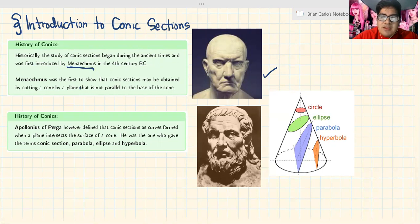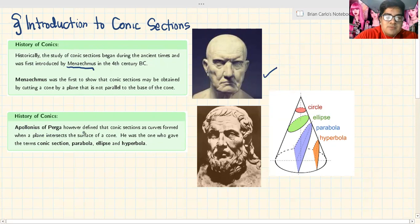However, Apollonius of Perga defined conic sections as curves formed when a plane intersects the surface of a cone. He was the one who gave the terms conic section, parabola, ellipse, and hyperbola. He was the one who named the conic sections, Apollonius.